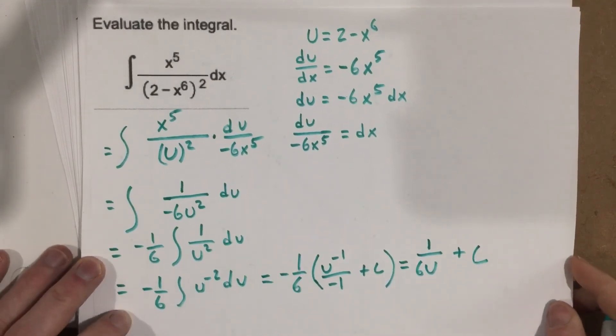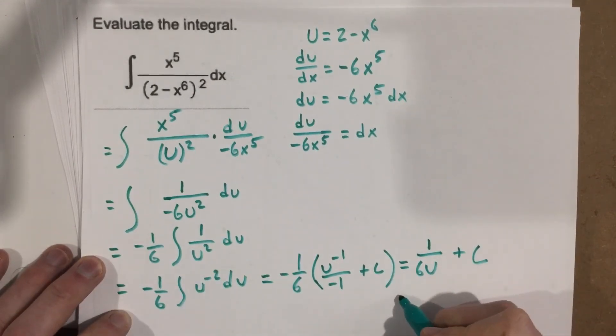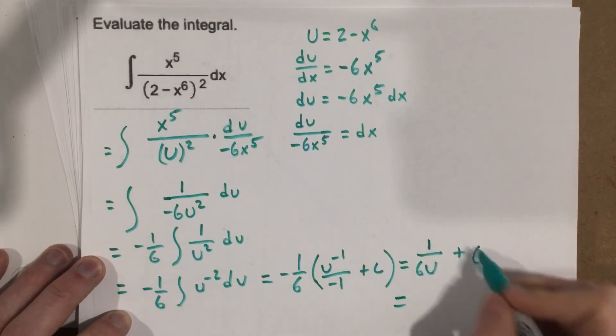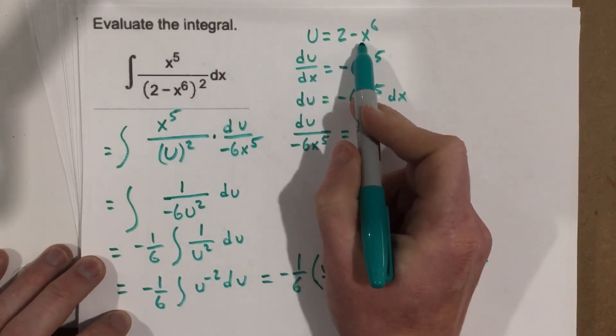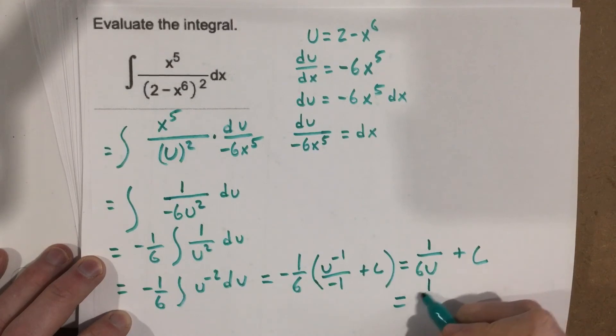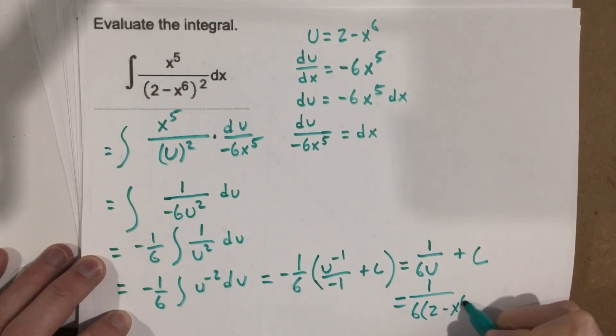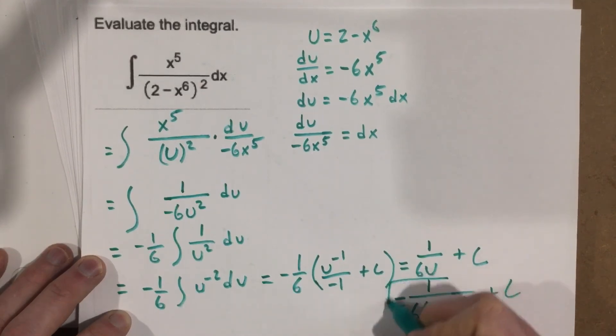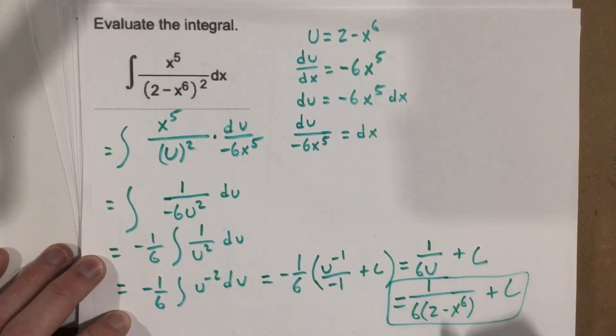And then we need to just replace the u back into this integration here. So it was 2 minus x to the 6th, so we have 1 over 6 times (2 minus x to the 6th) plus c. And that's our integration.